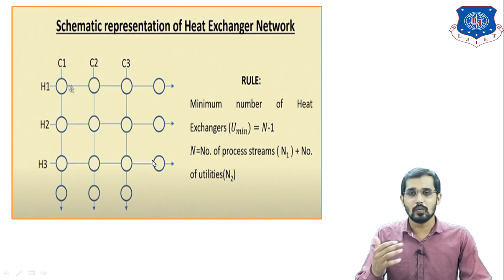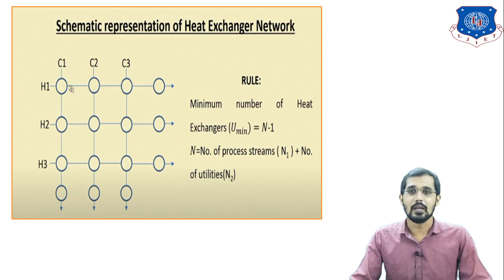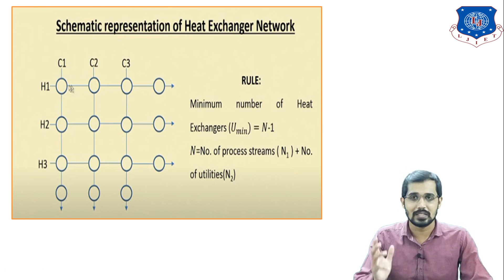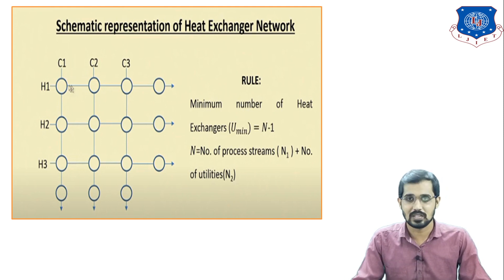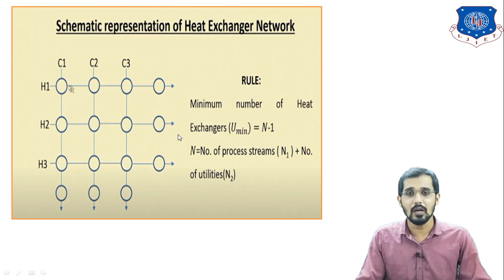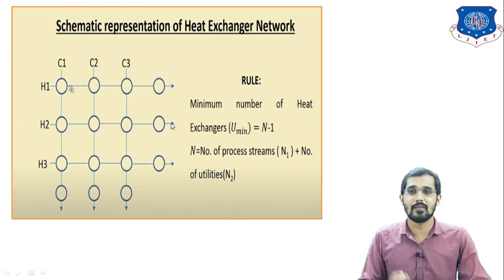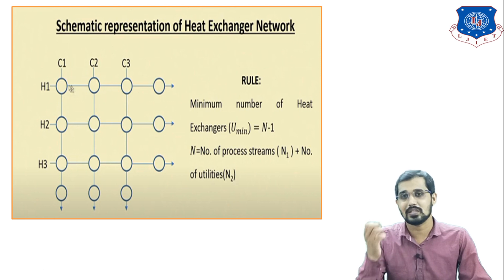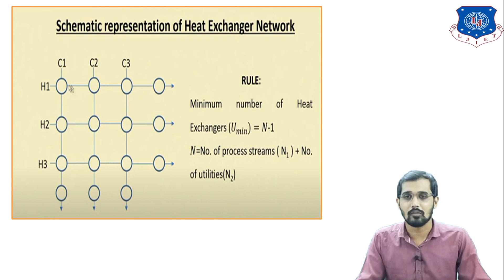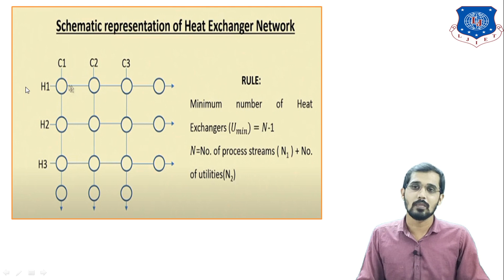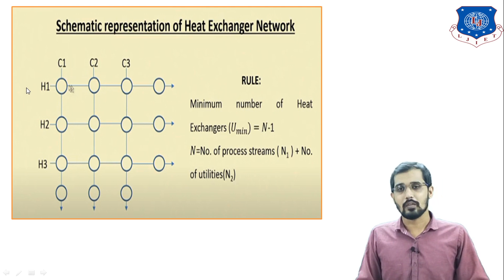If you are going to work in a design field and anyone asks how many heat exchangers are required in a process, this is the rule: U_minimum equals N minus 1. You should know how many process streams are available in that system — how many water streams are available. If you know this number, you can calculate the minimum number of heat exchangers required. Otherwise, you cannot calculate the minimum number of heat exchangers required.